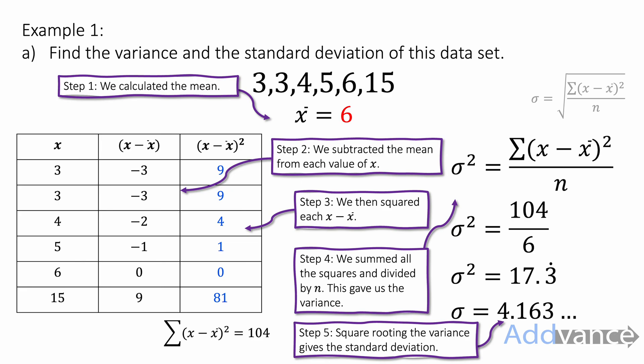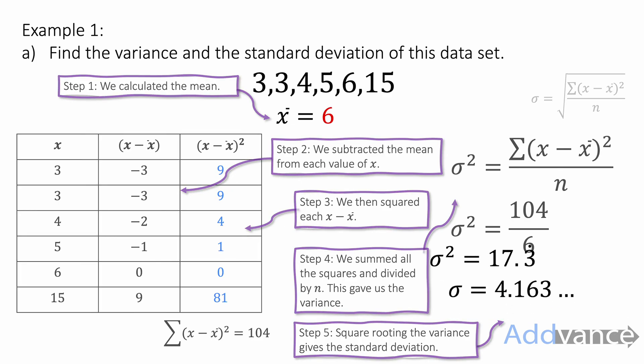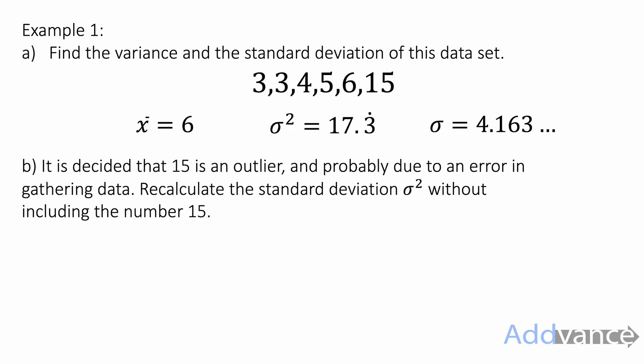Now, part b of this question says it is decided that 15 is an outlier, and probably due to an error in gathering the data. Recalculate the standard deviation without including the number 15. So we're going to do this again for the data set 3, 3, 4, 5, and 6, and we're going to ignore the 15.